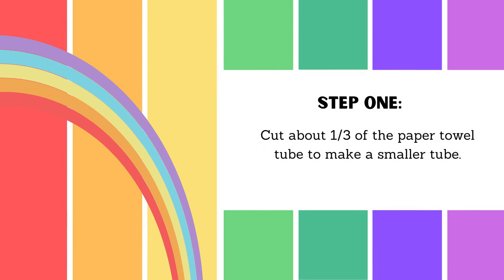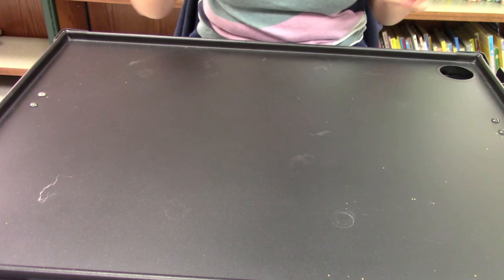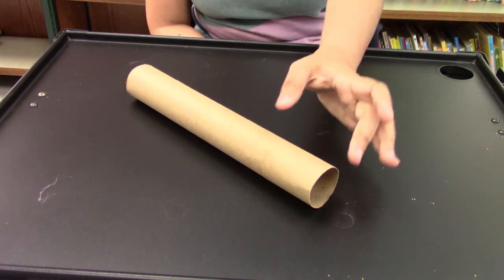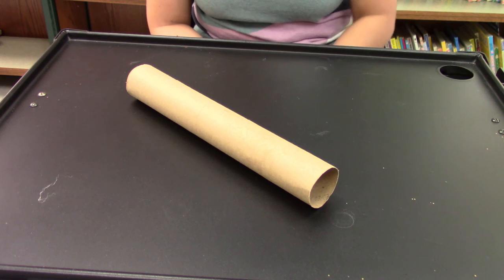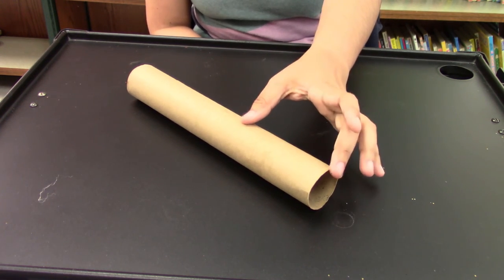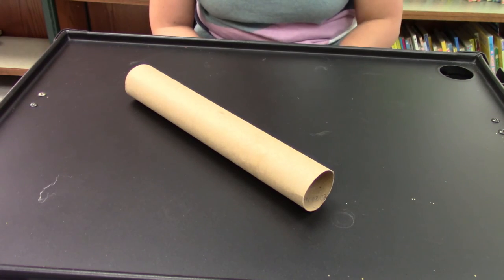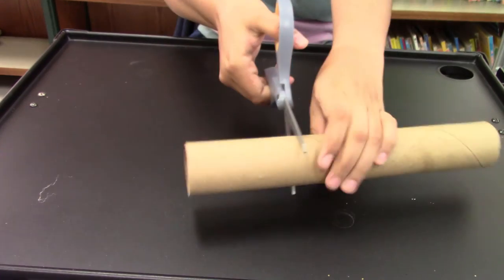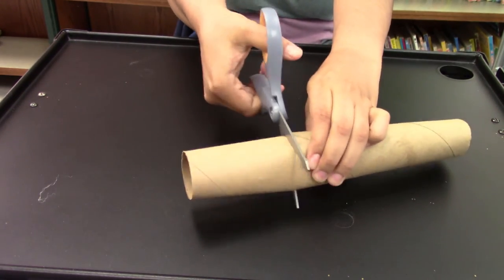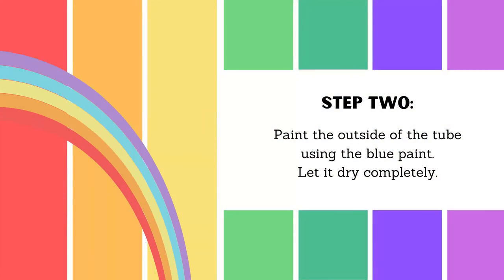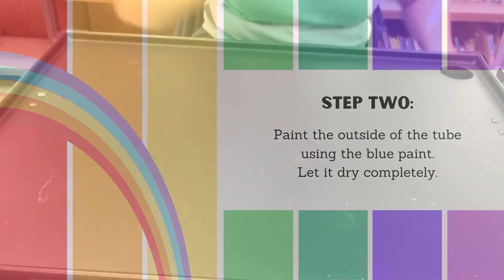First, you're going to take your paper towel roll and cut it to whatever desired length you like. We did about a third of it. It's easier if you cut it shorter, so whatever you prefer.